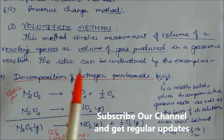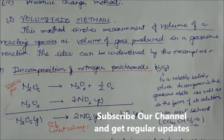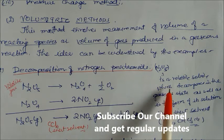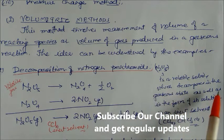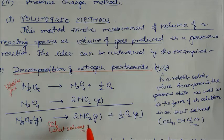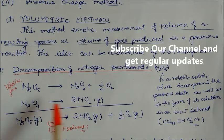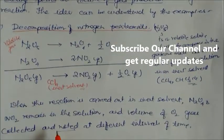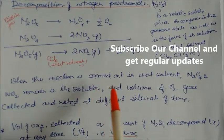Let us understand this with an example: the decomposition of nitrogen pentoxide (N₂O₅). N₂O₅ is a volatile solid which decomposes in the gaseous state as well as in solution. When an inert solvent like chloroform or CCl₄ is used, N₂O₅ is converted first into N₂O₄ and then N₂O₄ decomposes into two NO₂ molecules.